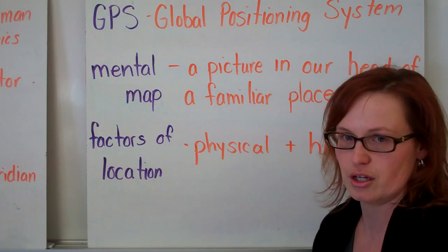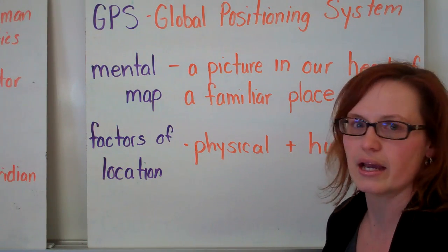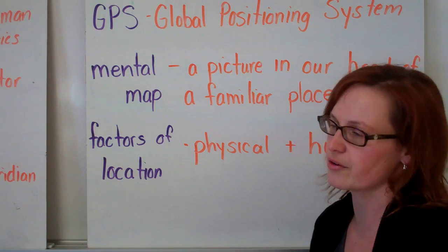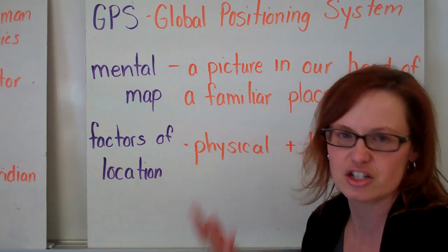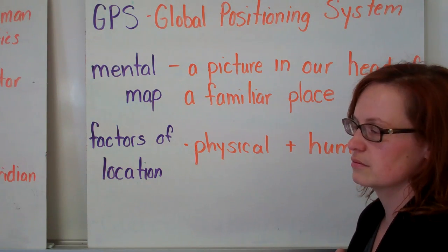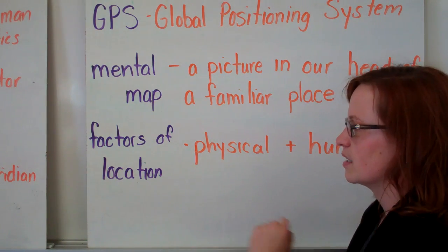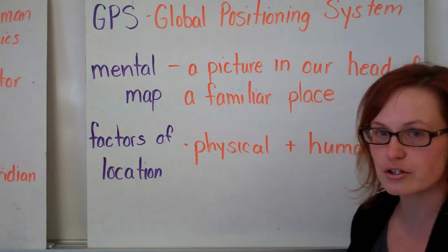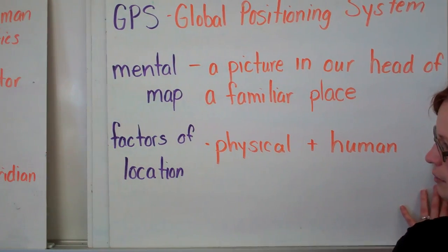Factors of location. Factors of location are the reasons why certain people reside in one place over another, where there's a high population in one place and not in another, and why there's a change in population. There can be physical and human factors related to location.